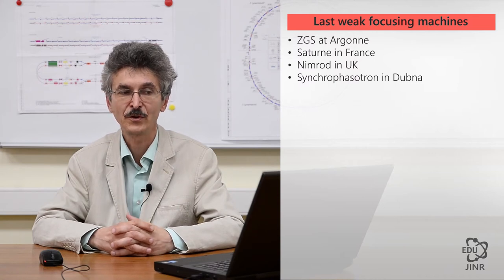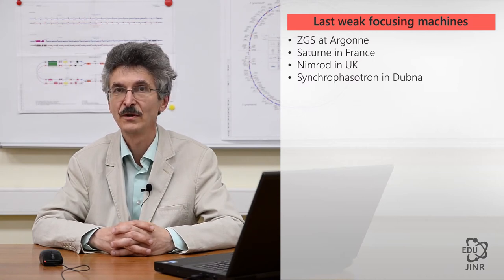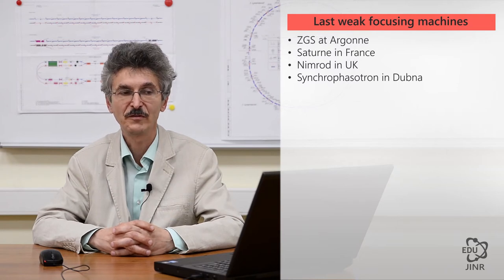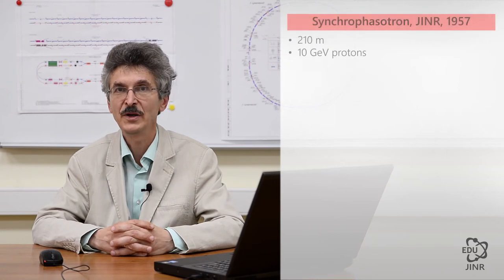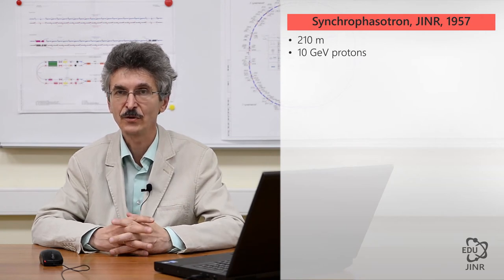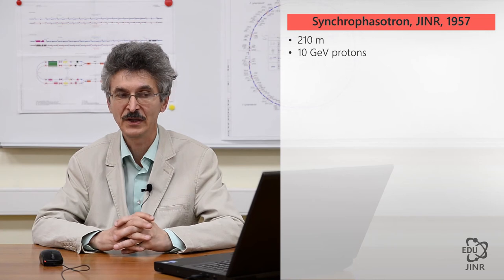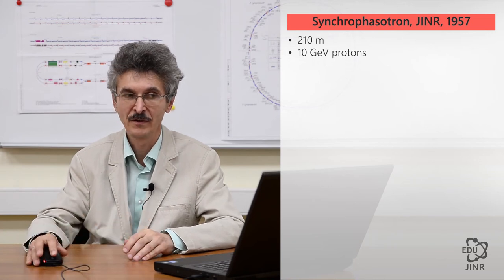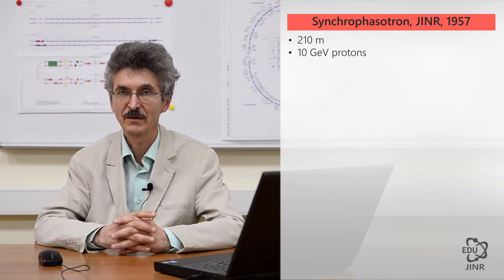The synchrophasotron was built and became operational in 1957. Its perimeter is 210 meters. It used to accelerate protons up to an energy range of 10 gigaelectron volts, which was a record at the time. This accelerator made history.